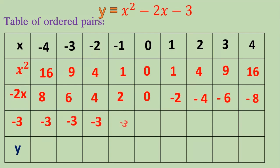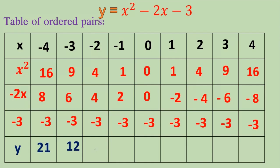In the third row, we have to take the constant value as it is in all the boxes. For the y value, we have to add the x squared minus 2x minus 3 values. Don't add the first row — add the second, third, and fourth rows.